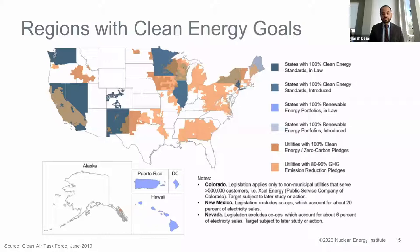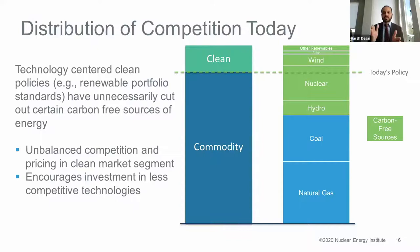Today, electricity is traded in independent system operators using a supply-demand curve, but there are states that treat it differently. States like New York, Illinois, New Jersey, Connecticut, and Ohio provide a bump in revenue or reduced tax burden if you generate clean, carbon-free electricity. Wind, solar, and the renewables do get tax benefits. Some nuclear power plants also receive clean energy credits, but for most nuclear power plants, they are treated just like commodity electricity generators.